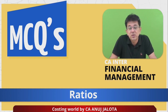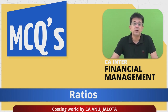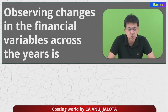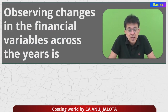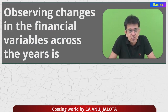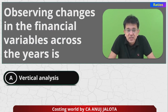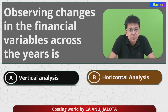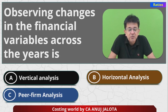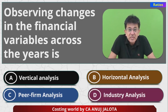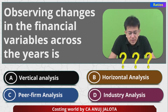Let's start with today's MCQ. Observing changes in financial variables across the years is which kind of analysis? A) Vertical analysis, B) Horizontal analysis, C) Peer firm analysis, D) Industry analysis. Think of the correct answer and comment.